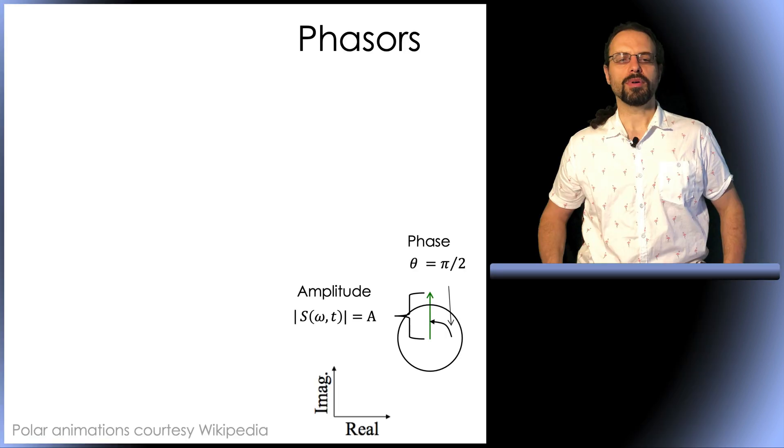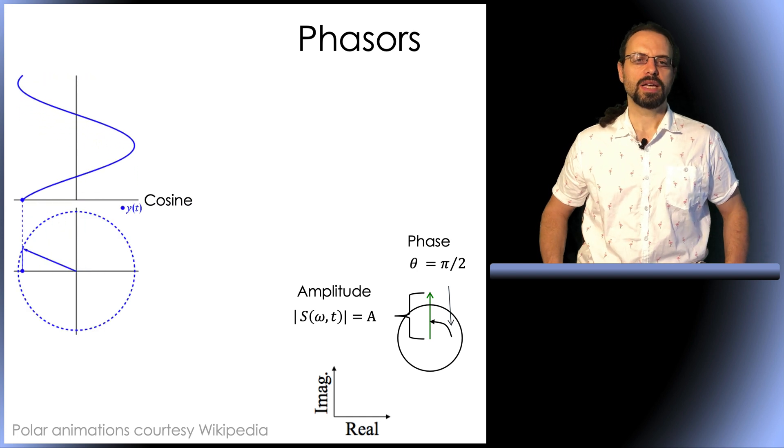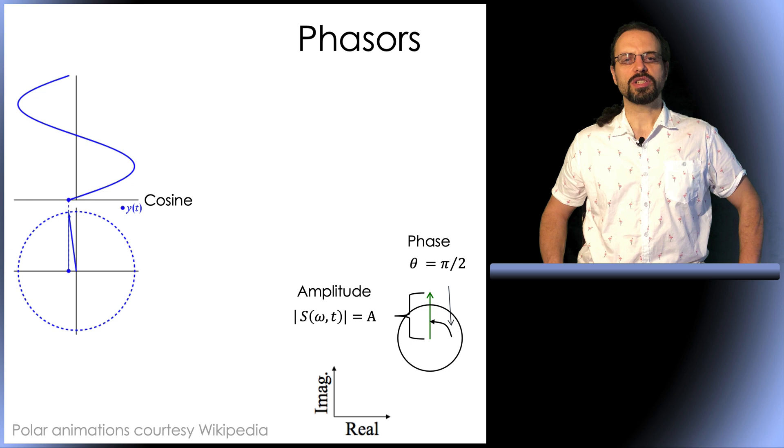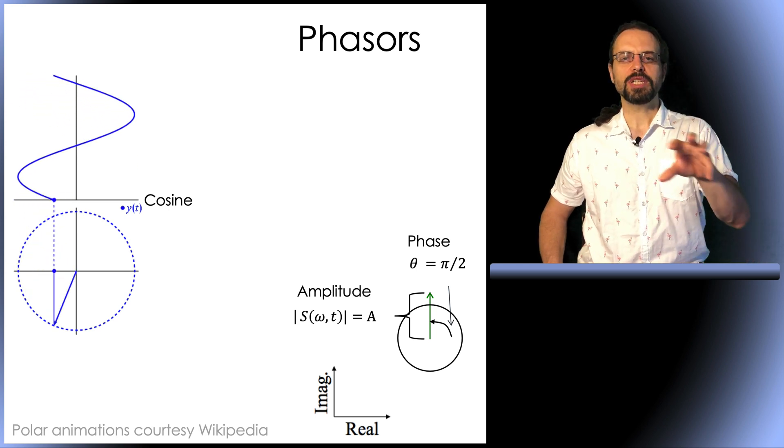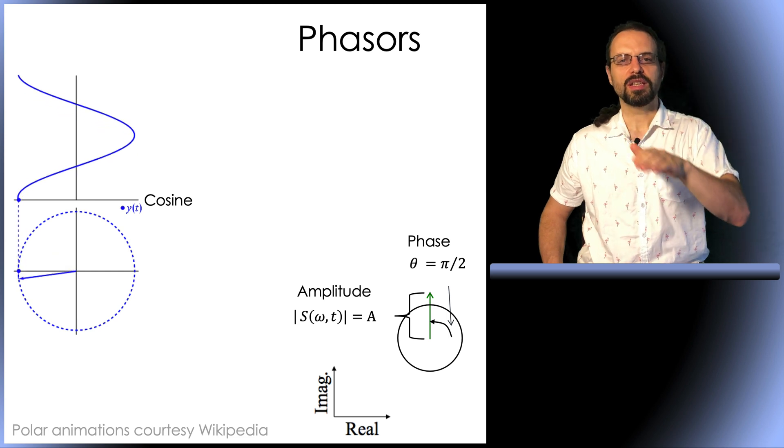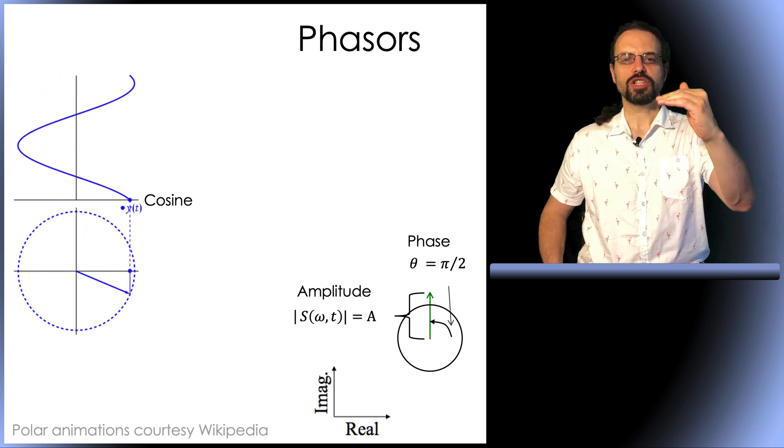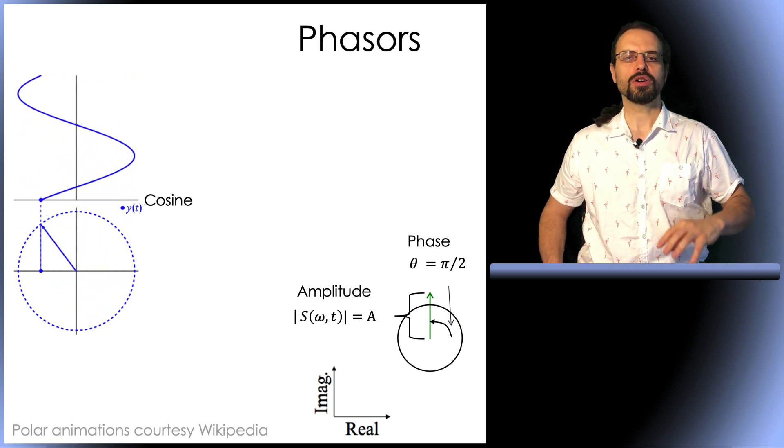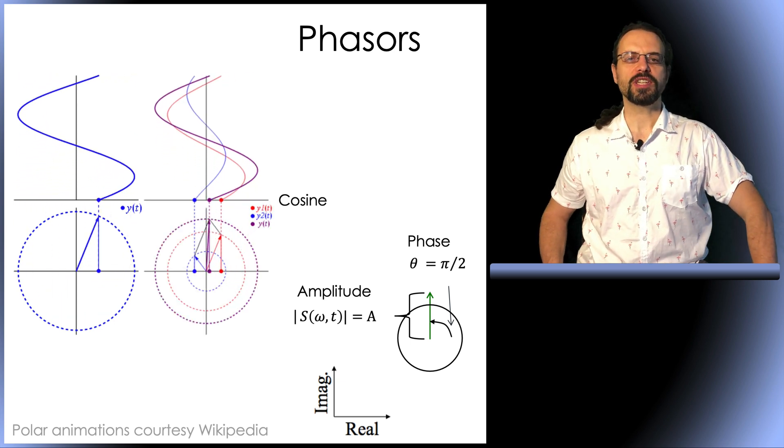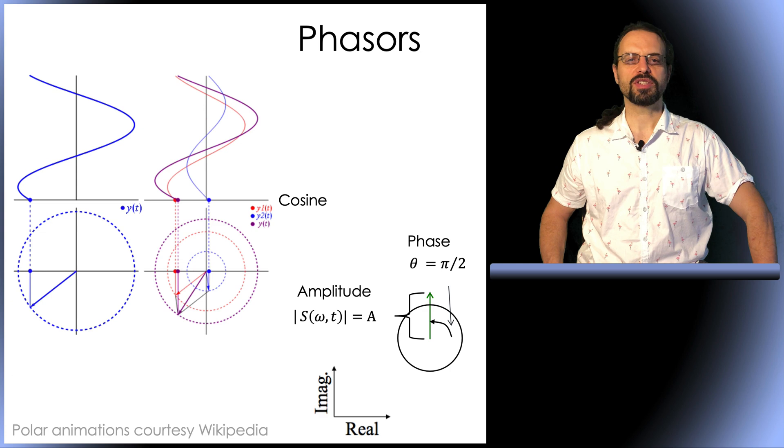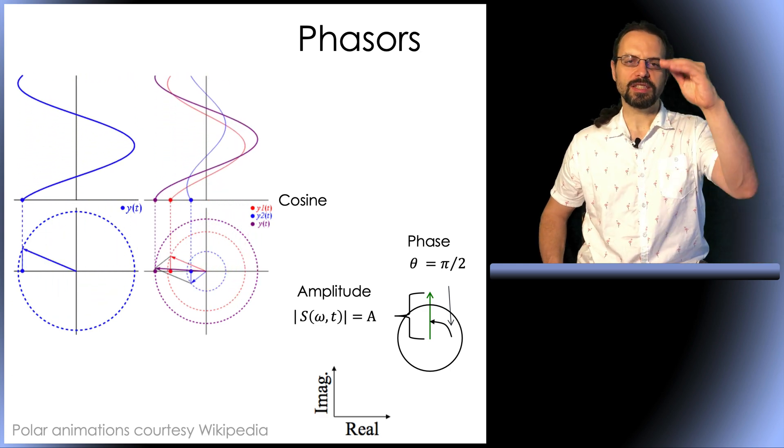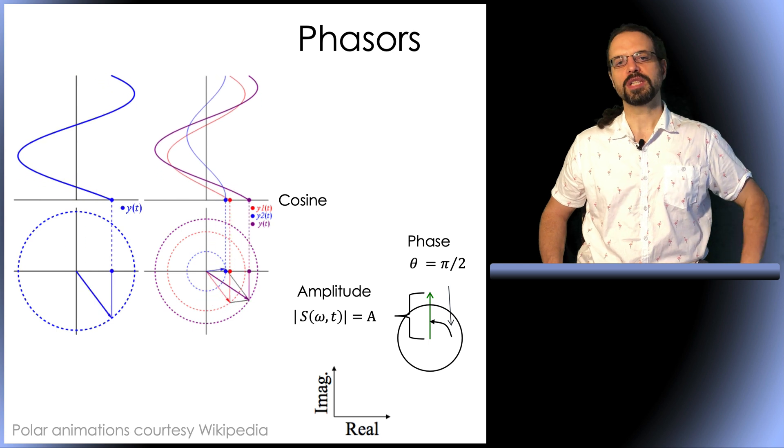So let's see an example here. This is the phasor that we just talked about. And as time increases, we can see the phasor rotates. And this is the representation of the real part of the phasor, which is the cosine. And here is another representation with three phasors, and the purple being the sum of the red and blue phasors. And we can see different phase and amplitude of this phasor as time increases.